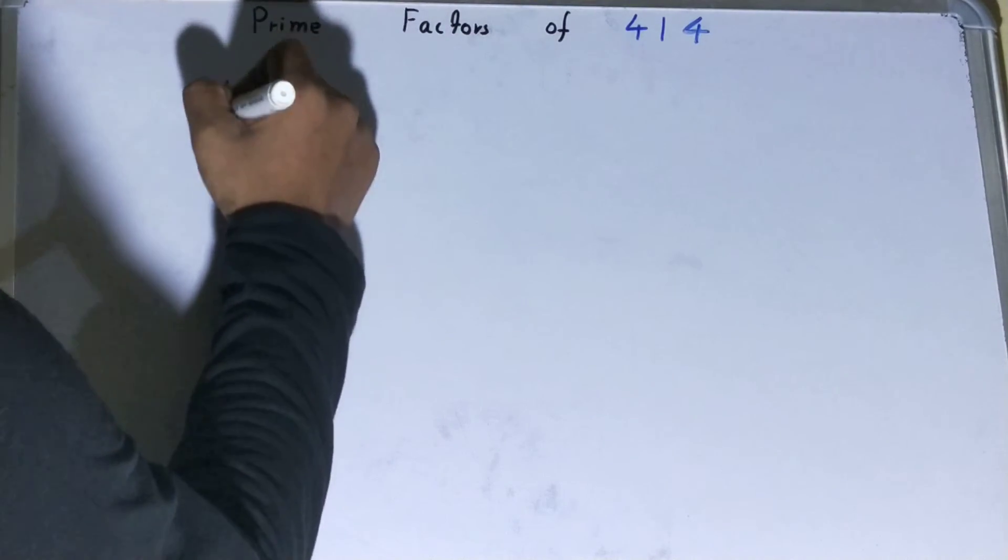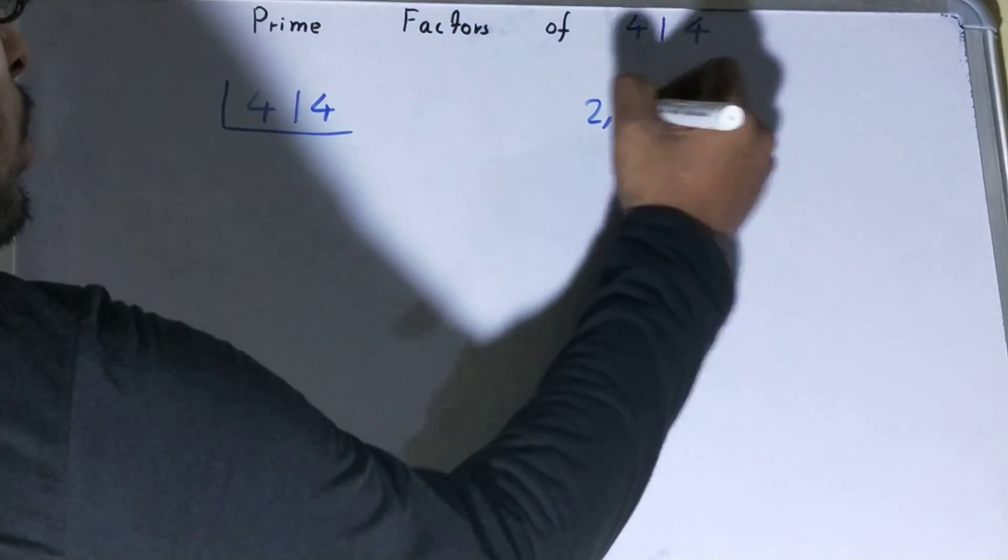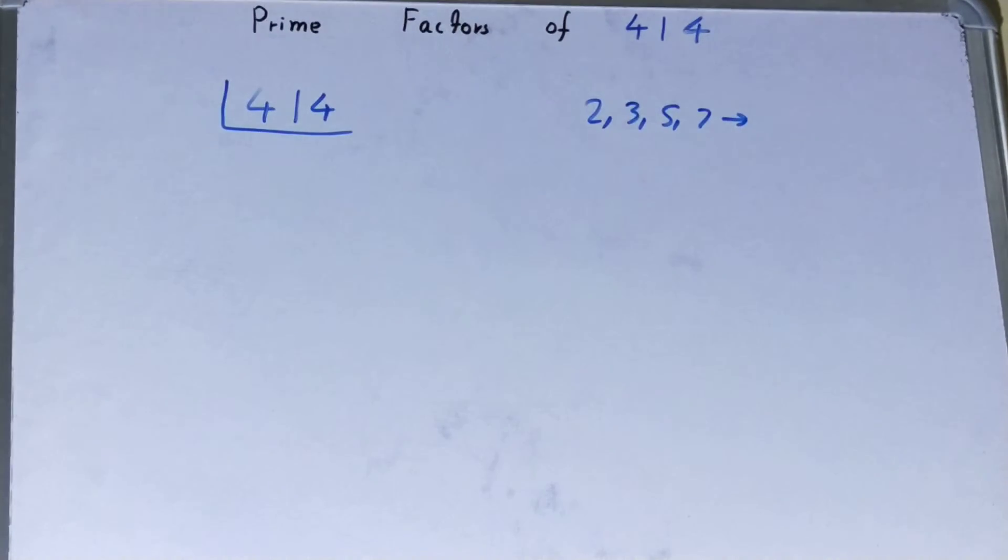Before solving it any further, you must know what prime numbers are. Prime numbers are numbers that are divisible by one and themselves only, like two, three, five, seven, and so on.